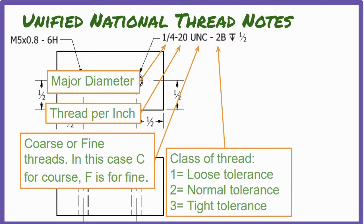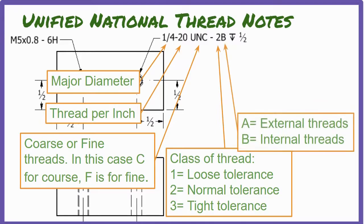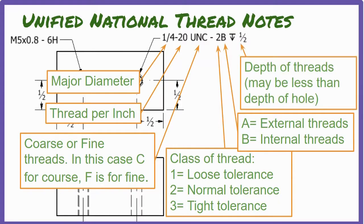The number 2 indicates the tolerance of the thread, or how much space is allowed between matching pairs of threads when they're spun together. 2 is by far the most commonly used tolerance. The letters A and B are used to signify whether the thread is internal, as in a hole, or external, as in a bolt. A thread note might also include a depth note to indicate that the threads stop after a specific depth, but it's usually assumed that the threads cover the full depth of the hole.